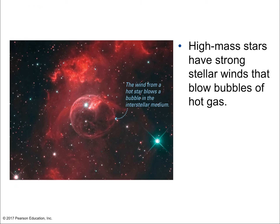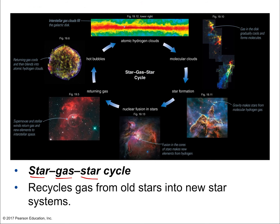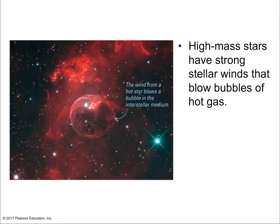The star-gas-star cycle recycles gas from old stars into new stars. Let's describe the steps: going from interstellar gas clouds back to stars and eventually supernovas and so on. High mass stars have strong stellar winds that blow bubbles of hot gas — those very hot stars heat and ionize gas, which emits energy and pushes the gas, causing areas of higher density concentration.